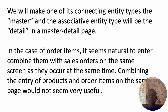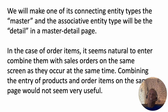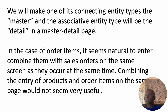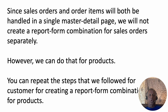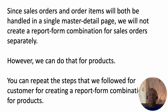To reiterate: whenever you have an associative entity type, it will be the detail on a master-detail form. The only question is which entity will be the master — one of the two entity types connected to the associative entity will be the master, and the other will just have its standalone form. In this case, we'll have a standalone form for products and a master-detail form to cover sales orders and order items. Sales orders and order items will be handled in a single master-detail page; we will not create a separate report-and-form combination for sales orders. For products, we will have a separate report-form like we did earlier.